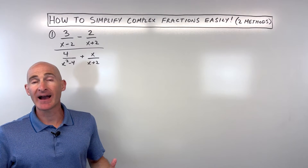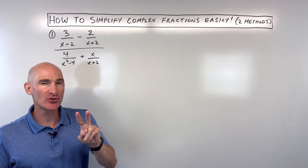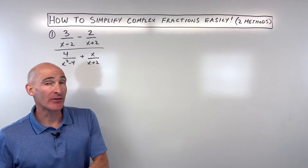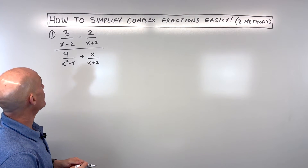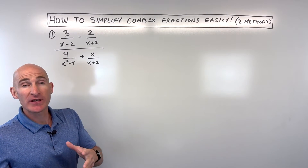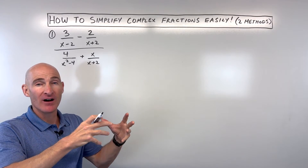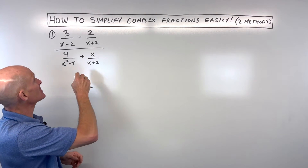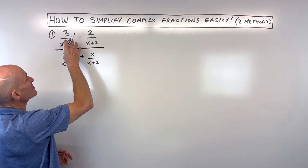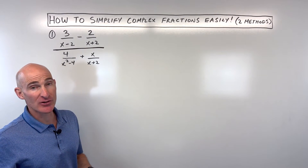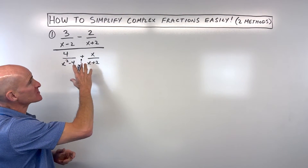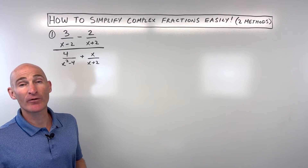In this video, you're going to learn how to simplify complex fractions, and I'm going to show you two different methods for doing it. We're going to go through two examples together. So let's start with the first example. A complex fraction is basically when you have a fraction inside of a larger fraction. You can see this fraction bar right here, and you've got fractions in the numerator and also fractions in the denominator. So overall, it's pretty complex, and we want to simplify it so that we don't have fractions within a fraction.